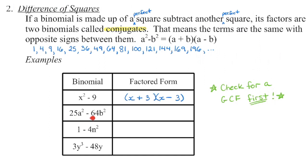Second example: do we have a greatest common factor? No. We are subtracting — perfect square, perfect square. We recognize this is a difference of squares and we set up the conjugates: one is a plus, one is a minus. Square root the first term, square root the second term. Check by FOILing back: 5a times 5a is 25a squared. Negative 40ab plus 40ab is 0ab — that's why we don't have a middle term. And 8b times negative 8b is negative 64b squared.